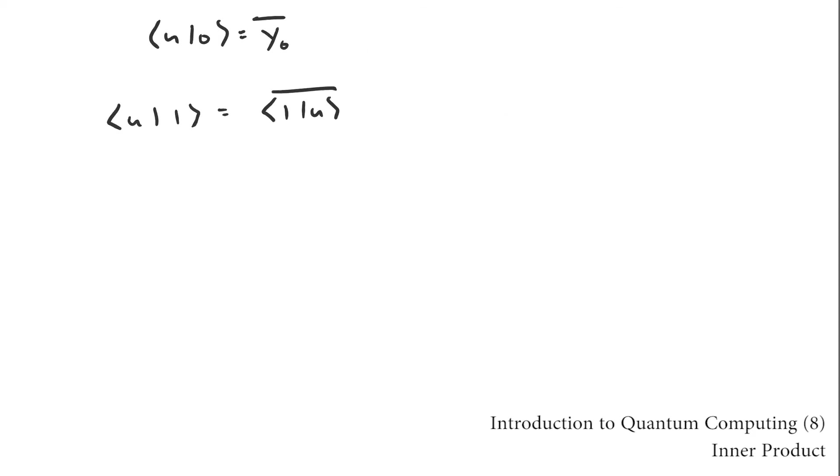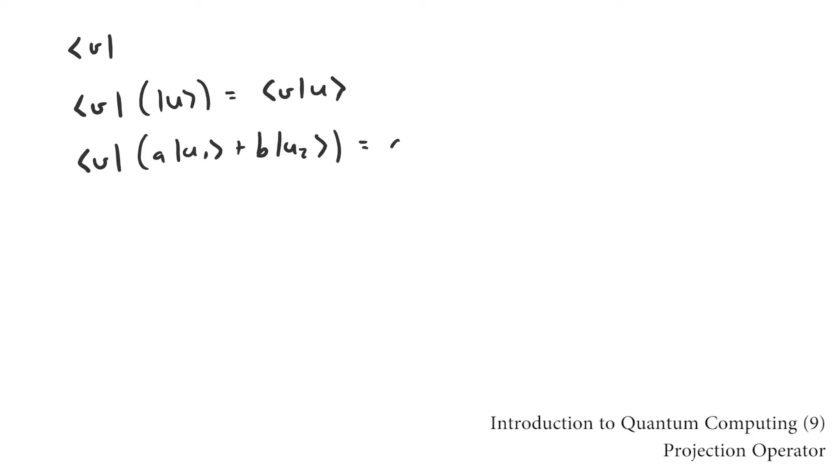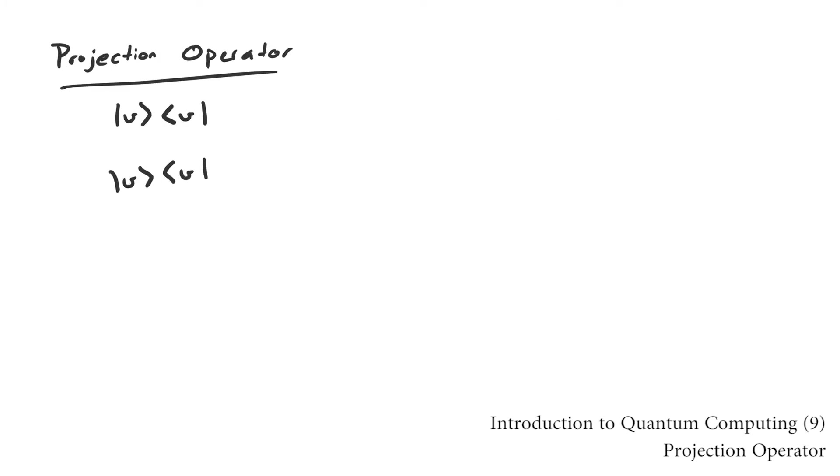The inner product allows us to define an operator that acts on a vector to produce a number. We can extend this operator to a linear transformation by taking the number produced and using it as a scalar for the left vector in the inner product. This is called a projection operator.